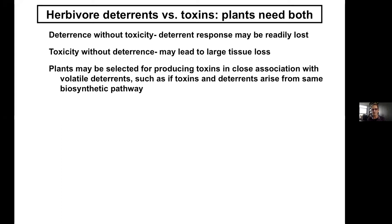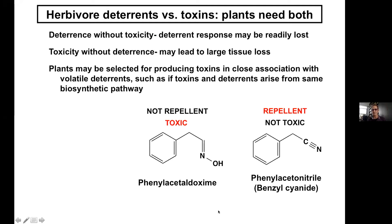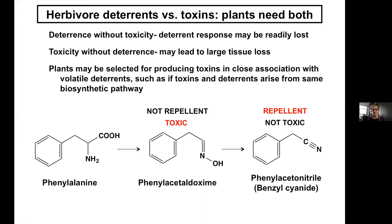A cytochrome P450 converts phenylalanine to the aldoxine, and then another one converts it to benzalcyanide. So they're actually both present in the plant at the same time. This may be one way plants get around the problem of having just one compound active in one particular way — by having both in a similar pathway. I particularly liked this story because biosynthesis really matters, and we have to care about how compounds are made.